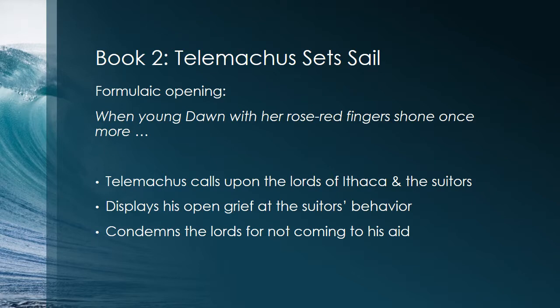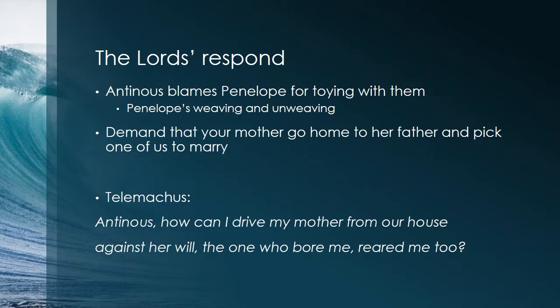Book two: Telemachus Sets Sail. It begins with the formulaic opening 'When young Dawn with her rose-red fingers shone once more' — a formula we'll see throughout the poem at daybreak. Telemachus calls upon the lords of Ithaca and the suitors, weeping openly over the suitors' disrespect of his home and condemning his fellow lords for not coming to his aid. Some lords respect Telemachus, but the suitors largely disrespect him again. One suitor, Antinous, blames Penelope — saying she spent three years weaving and secretly unweaving her web at night, claiming she'd choose a husband once she finished, effectively toying with them.